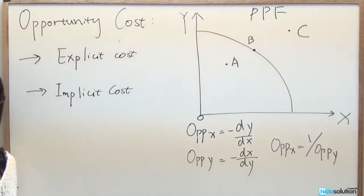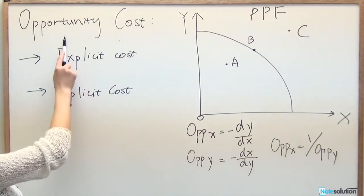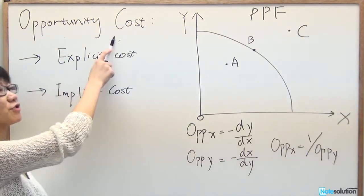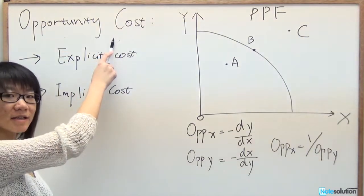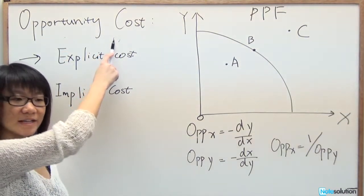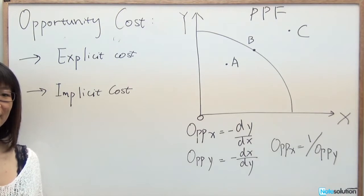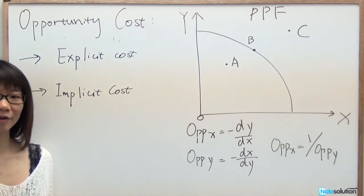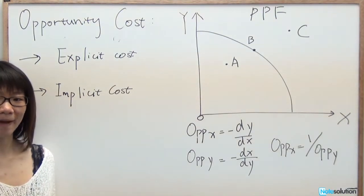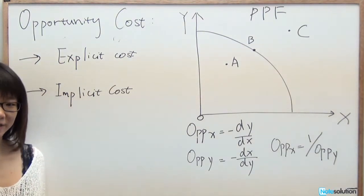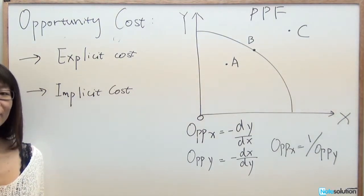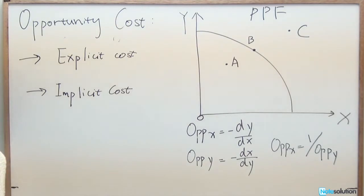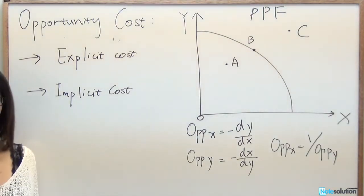The first topic for term test one is opportunity cost. The definition of opportunity cost is that it is the value of the next best alternative — in other words, it is the value that you sacrifice to obtain your best alternative.